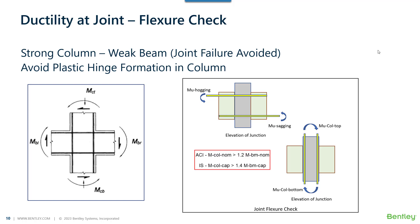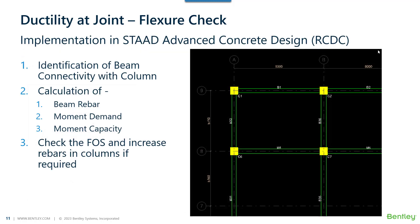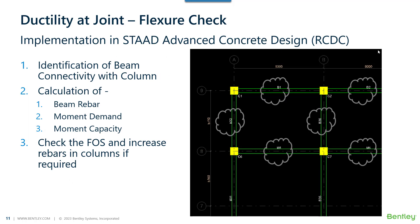The moment capacity of the beam is purely based on the reinforcement provided in the beam, not from the demand from analysis. For columns, it is sometimes based on action codes and sometimes on pure moment capacity depending on which clauses are being referenced. Similar to the shear check procedure described earlier, joints are identified based on the beams framing into a column, and at each joint the flexural check is performed.